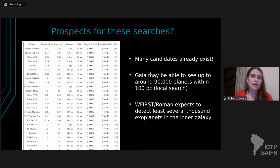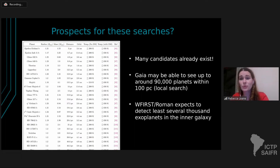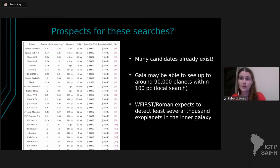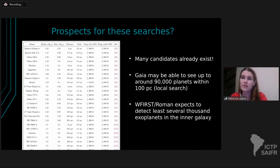The prospects for these searches: we've set up this search, shown it's possible to detect dark matter this way, and there should be lots of exoplanets that could reveal this signal. There are actually many candidates that already exist. We're really just waiting for James Webb to come online. In our paper we showed a table of candidates very close by that potentially could reveal some dark matter heating signal. Gaia has predicted it could find about 90,000 planets in the local neighborhood, and another telescope called Roman expects to find at least several thousand exoplanets in the inner galaxy.